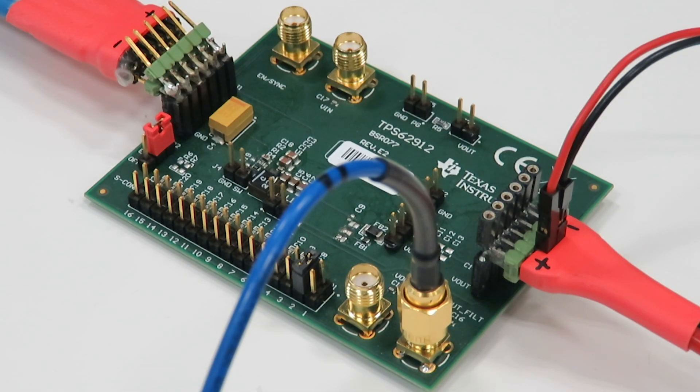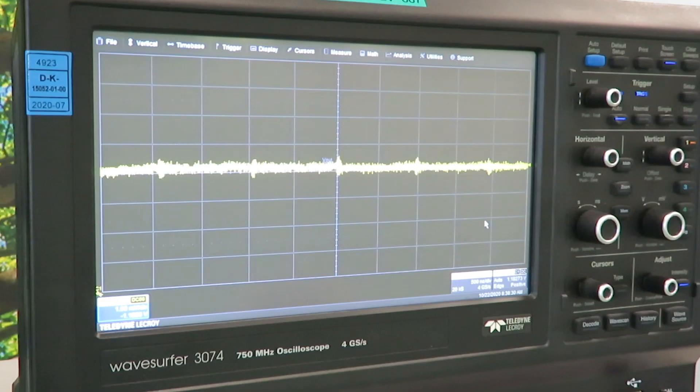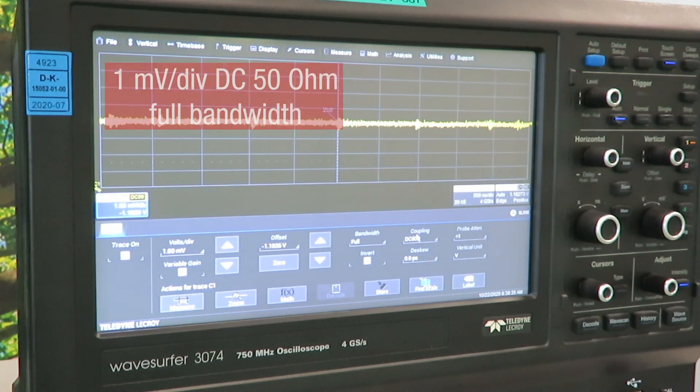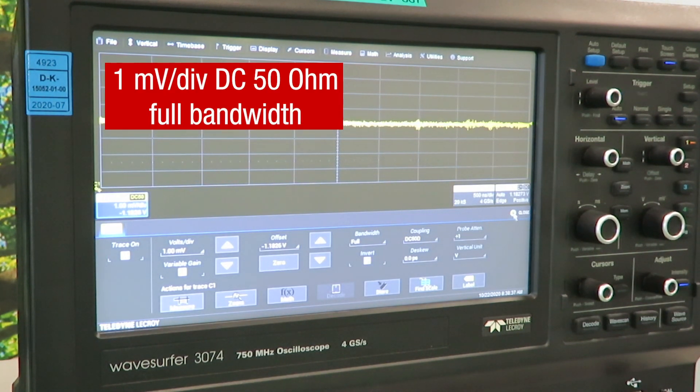For an accurate output voltage measurement I am using an SMC connector. We use the following scope settings: 1 mV per division, 50 Ohm DC termination at full bandwidth.